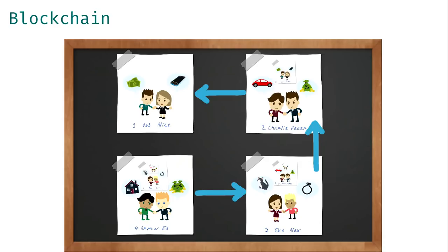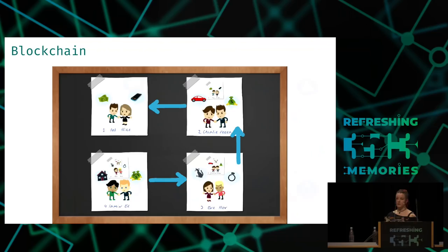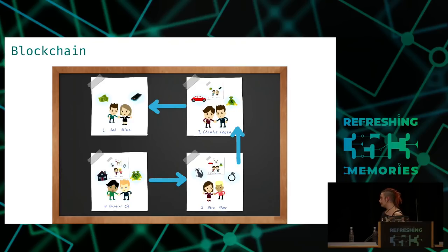Now we can see the big picture. If our evil party wants to change something on the first trade — the first picture — that means he must change the second, the third, and the fourth picture as well. Otherwise this modification is detectable. So one can say we have created our very special kind of blockchain here, consisting of Polaroid pictures which represent blocks.